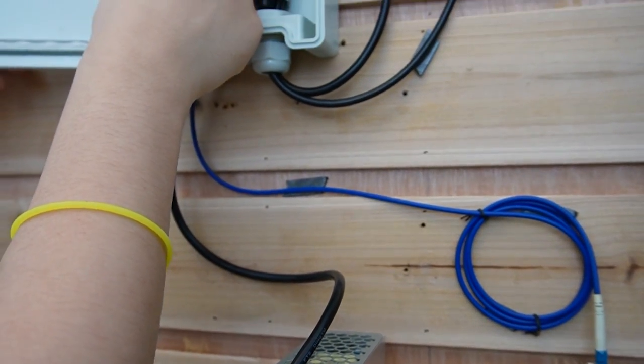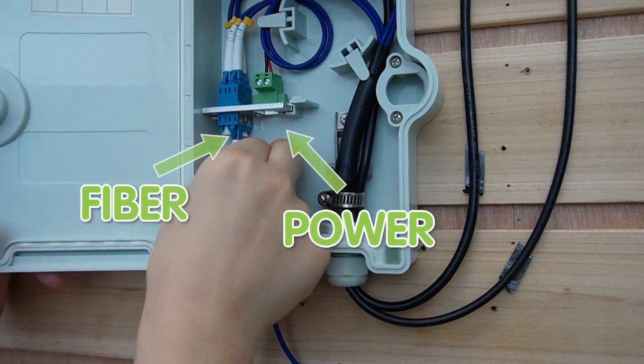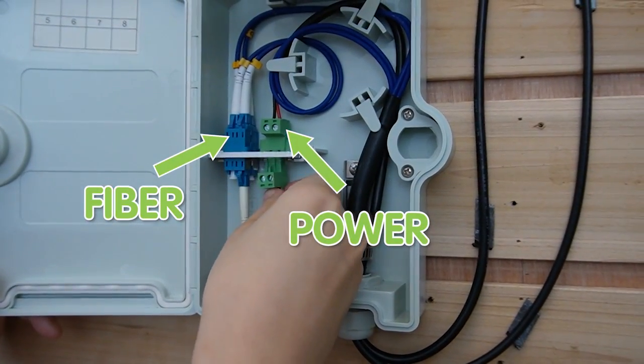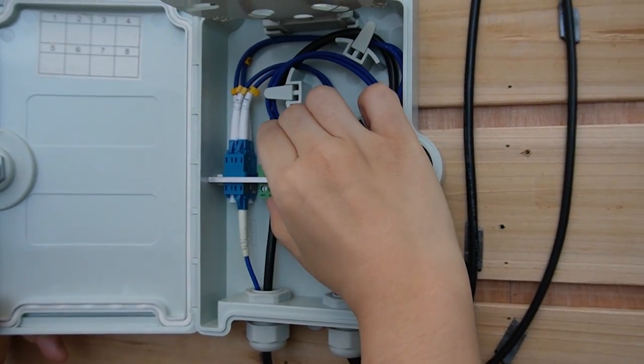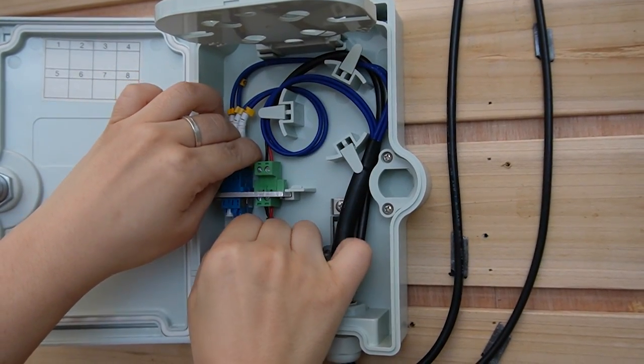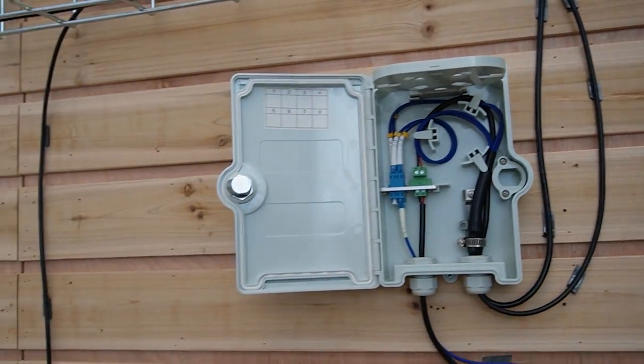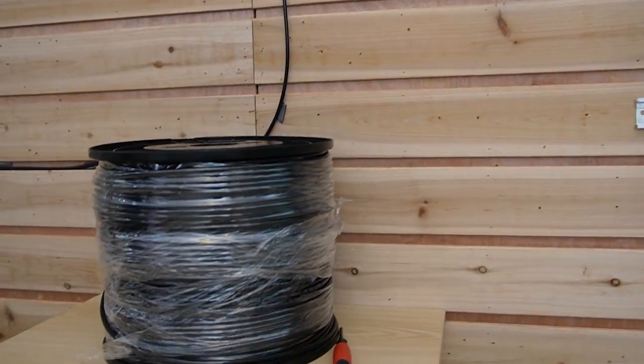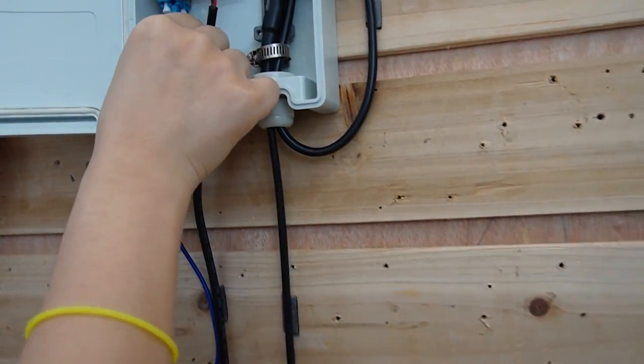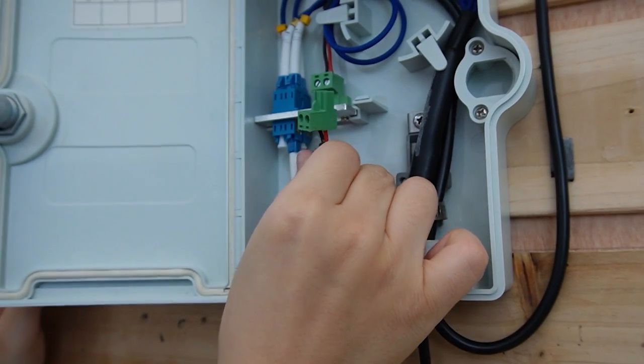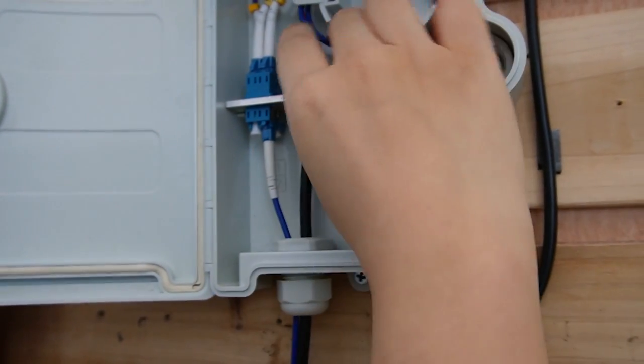Now all we need to do is connect the fiber optic cable here and the power source. Let's plug them in. And you can see there are only two cables coming over here to the other termination box. So we are doing the same setup here. Plug in this and the power supply. Done.